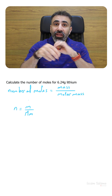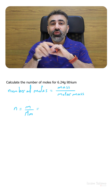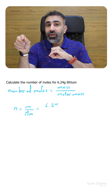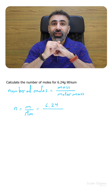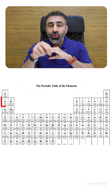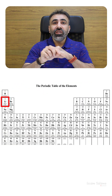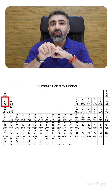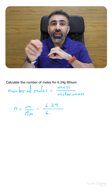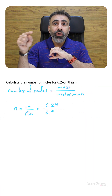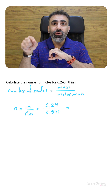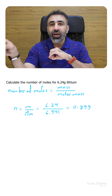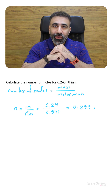The mass given in the question is equal to 6.24, and the molar mass we have to take from the periodic table. The molar mass for lithium is equal to 6.941. So we do the math and find the answer with the proper number of significant figures is going to be equal to 0.899 moles of lithium.